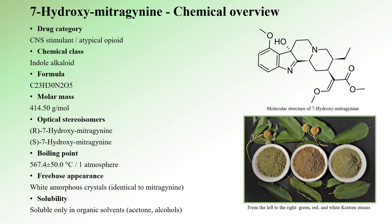Now let's delve into 7-hydroxymitragynine, a compound that shares some intriguing qualities with mitragynine. Likewise to mitragynine, 7-hydroxymitragynine can act as both a CNS stimulant and an atypical opioid, depending on the dosage. It too belongs to the indole alkaloid chemical class and its chemical formula is C23H30N2O5, with a molar mass of 414.5 grams per mole. Unlike mitragynine, 7-hydroxymitragynine has only two optical stereoisomers.